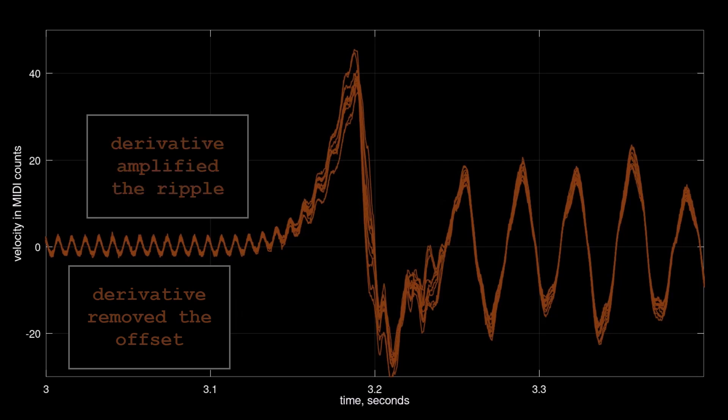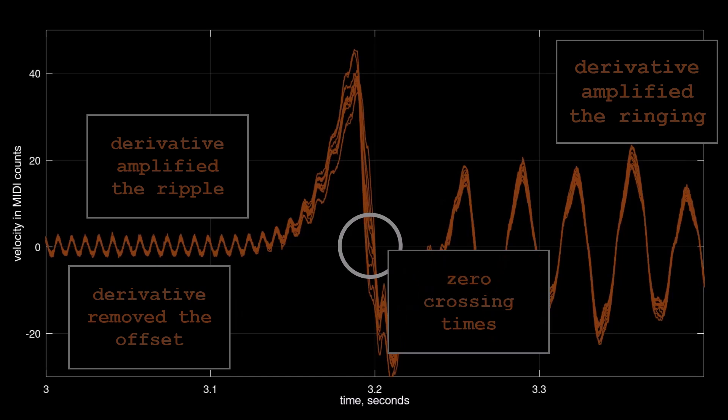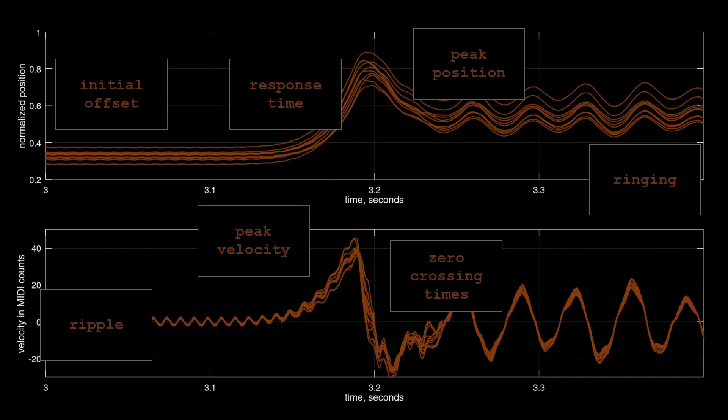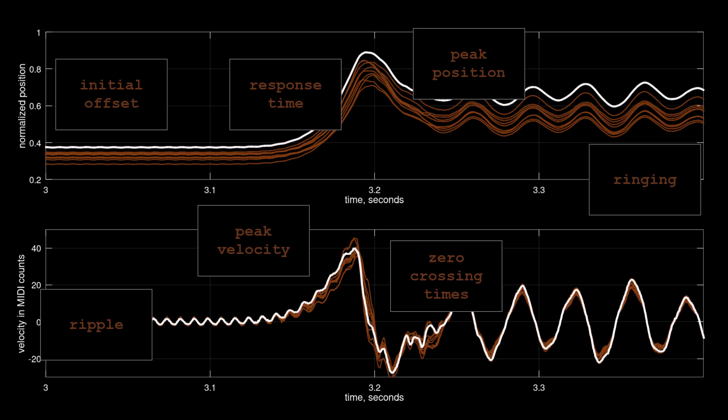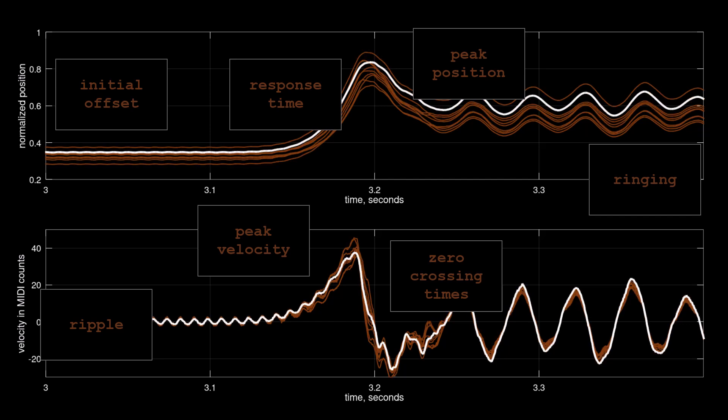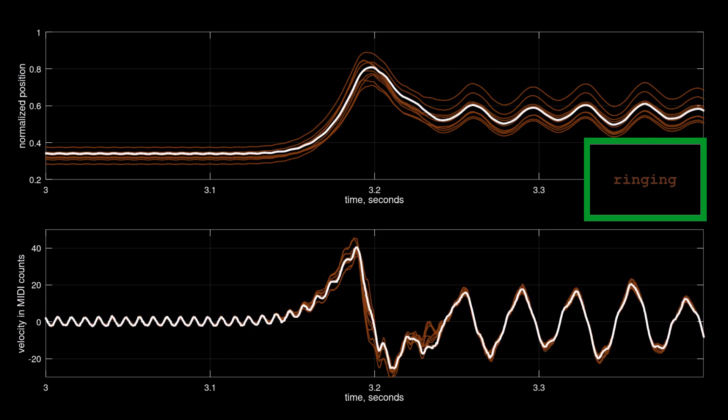Similar problems as position. Taking derivative eliminated the offset but it amplified this noise. The zero crossing times, which are the instant of hitting a virtual string, are not simultaneous, and the peak velocity, the MIDI volume, is not consistent for all plots. So this data confirms a feeling I have had for a while while playing the piano.